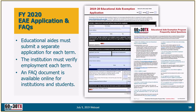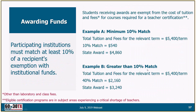The student must be currently working for a school district for the entire term in which they receive the award, so you need to check eligibility frequently. We publish two editions of frequently asked questions annually — an institution edition available only on the Student Financial Aid Programs website, and a student edition available on the educational aid webpage on College for All Texans. The student must also be in a teacher certification program in a critical shortage area.